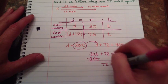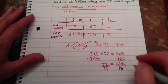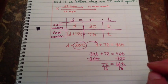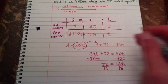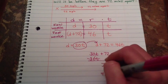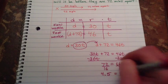Divide both sides by 16. And I end up with 4.5 equals t.